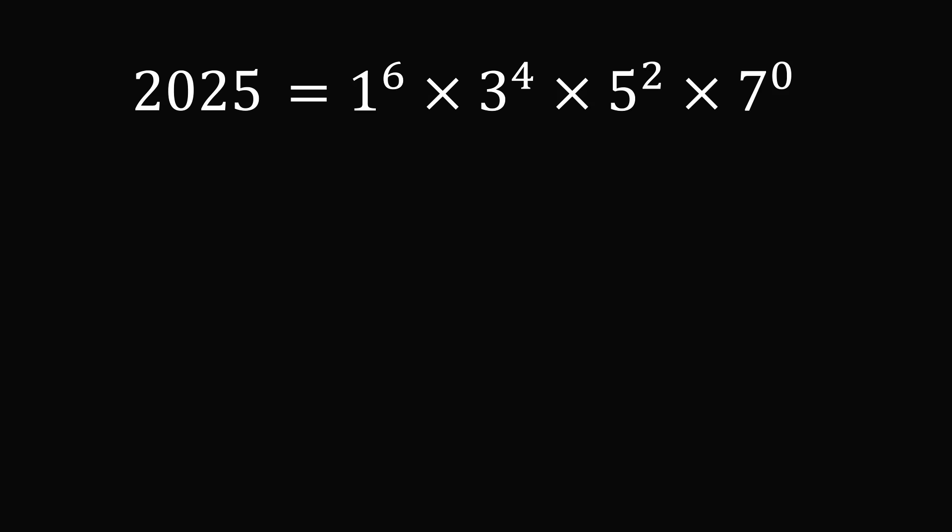There are also other clever ways to write 2025. Here is one such way: 2025 = 12 × 3 + 4 + 5 × (6 + 7) × 8 + 9. We have the digits going from 1 to 9 in some arrangement which will get to 2025.